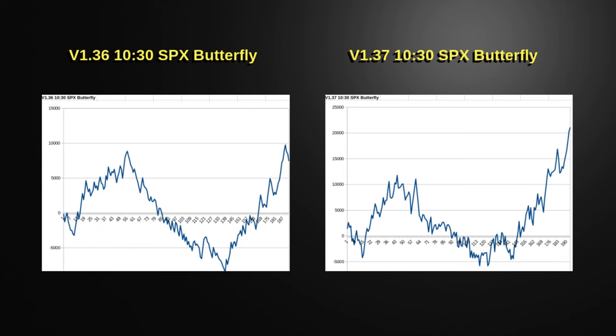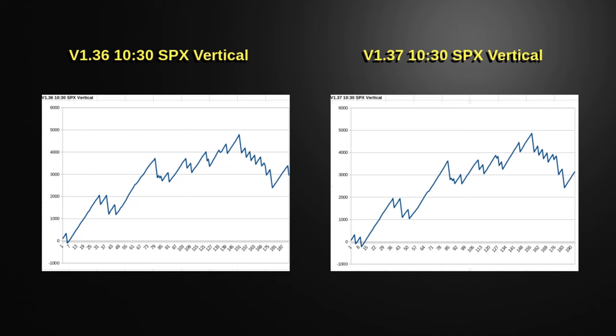Let's look at some metrics. Version 1.3.6 versus 1.3.7, side by side — talking the 10:30 SPX butterfly. You can see that 1.3.6 has a much deeper drawdown and limited profitability, where 1.3.7 has less drawdown and much higher profitability. That's because butterflies have been the bane of my existence in this software and I did a complete overhaul of the butterfly code. The 10:30 SPX vertical in 1.3.6 and 1.3.7 are almost identical, because if it's not broke, don't fix it.